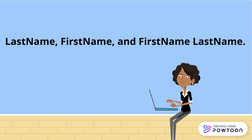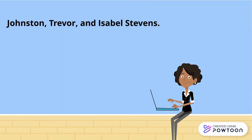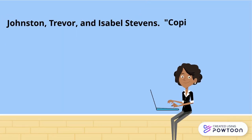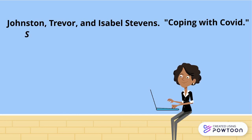For a source with three or more authors, list the first author's last name, comma, first name, comma, et al., period. After the author or authors' names, add the title of the article in quotation marks, placing a period at the end of the title before the end quotation mark. Then add the publication or source's title in italics, followed by a comma.